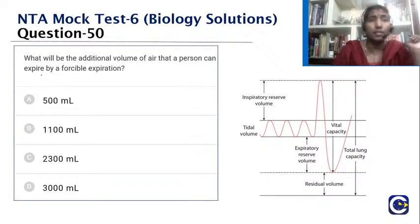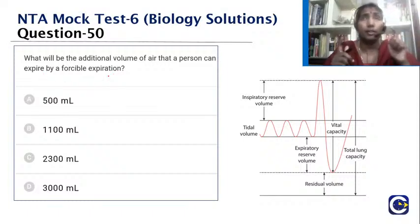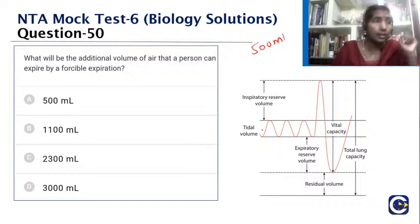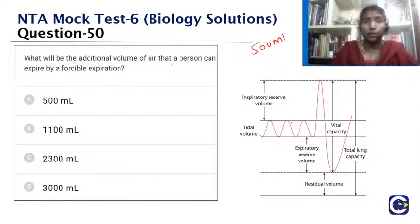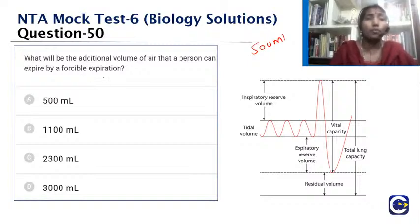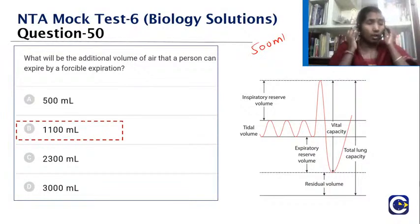The question asks about the additional volume of air a person can expire by forcible expiration. Tidal volume is the air inspired or expired during a normal breathing cycle, around 500 ml. The additional volume expired forcefully is called the expiratory reserve volume (ERV). The value of ERV is around 1100 ml.